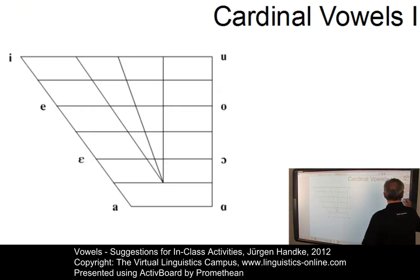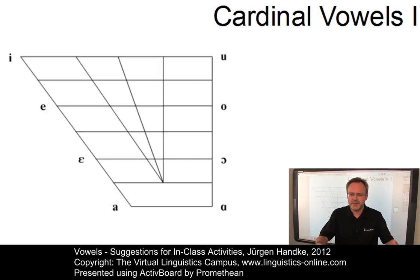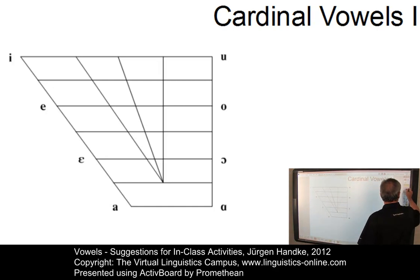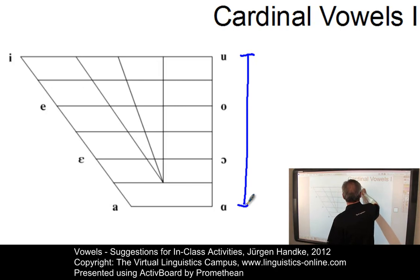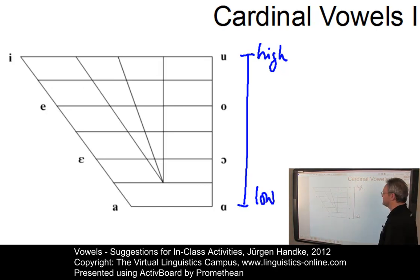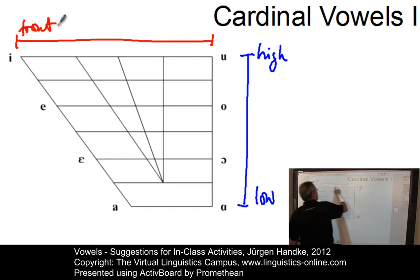This is what I suggest to do first. I would try to recall the two central parameters of vowel classification and associate them with some vowels which students might want to classify along these lines. You should ask students for the central vertical parameters and they would certainly come up with terms such as high and low. Furthermore, you have vowels that can be classified according to tongue position along the horizontal line in terms of front and back.